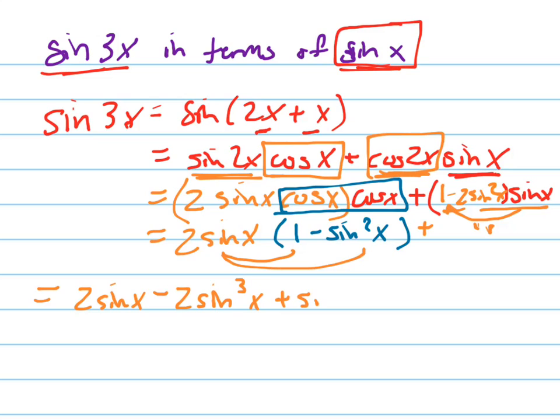Plus sine x minus 2 sine cubed x. And now let's add like terms. That's 3 sine x. And that's minus 4 sine cubed x.